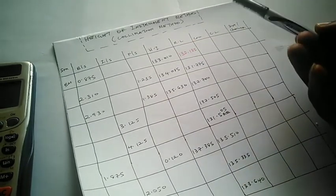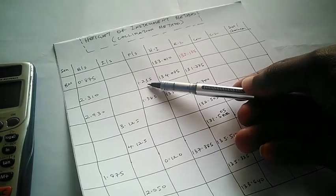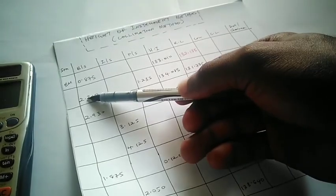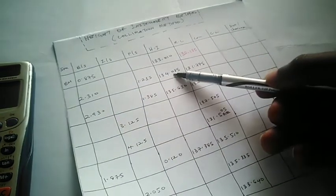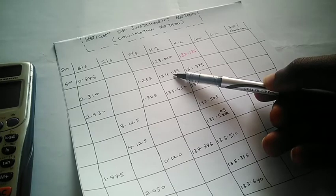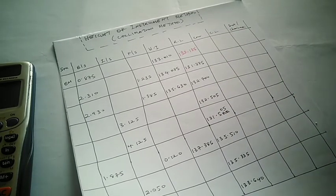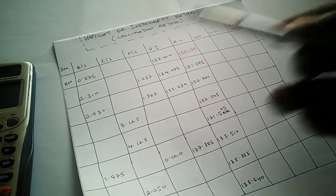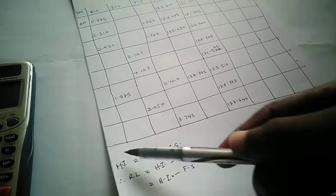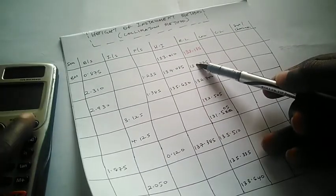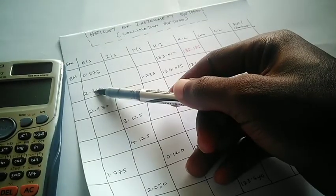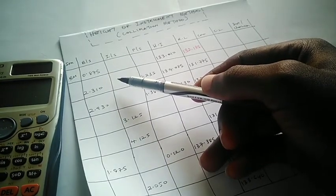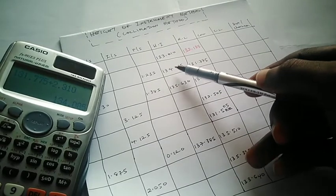When you set up the instrument again, you need another height of instrument. Remember, the height of instrument is the height of the instrument when you set it up. From the formula: Height of Instrument equals Reduced Level plus Backsight. So this new height of instrument will be the reduced level of 131.775 plus the backsight of 2.310, giving us 134.085 — the height of instrument for the new setup.